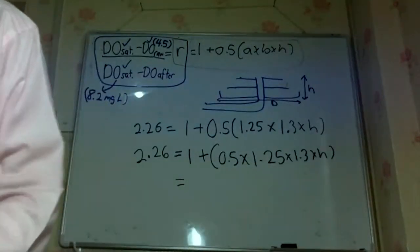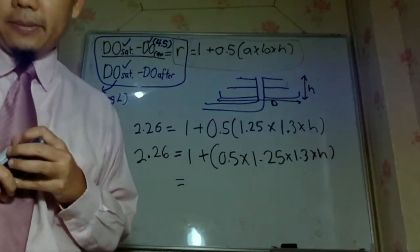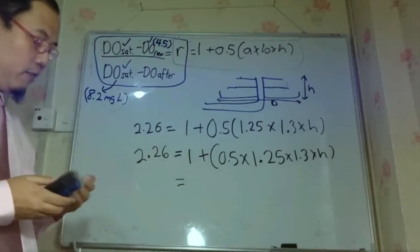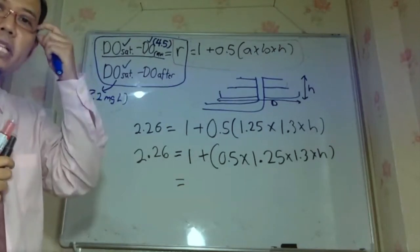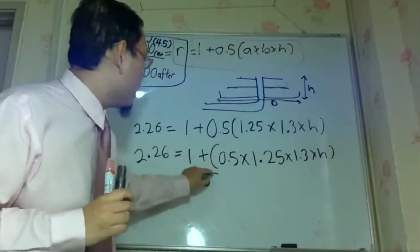1.55. 1.55, we have already got one answer. Is that correct? 1.55, okay, so assume that 2% given 1.55. 1.55. I assume this one is correct, okay.